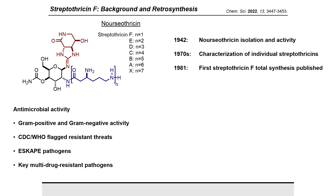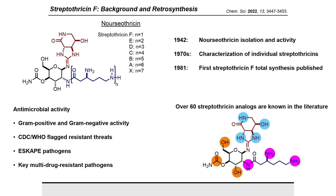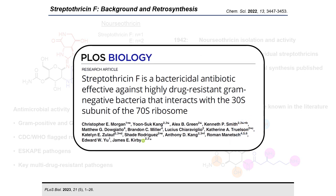Over 60 streptothricins are known in the literature, many of which are naturally occurring. However, a large subset are semi-synthetic acyl or alkyl derivatives of the primary amines on the beta-lysine subunit. For those interested in the biology of Streptothricin F, I'd like to point you to our recent PLOS Biology paper from our collaborative research effort focusing on the bactericidal effect and mechanism of action of Streptothricin F.